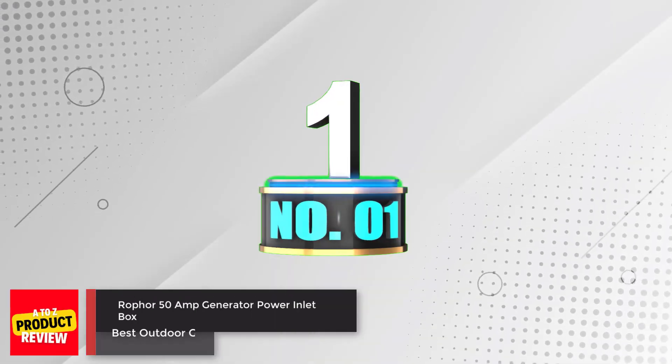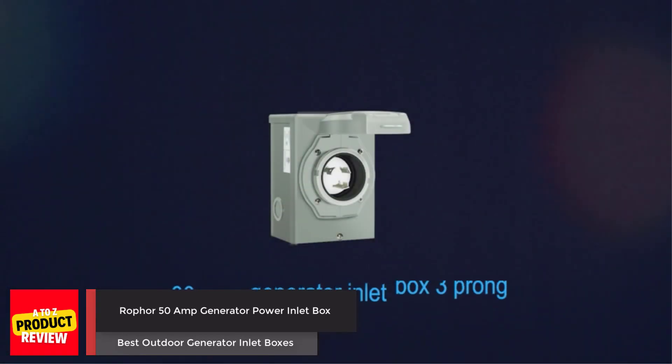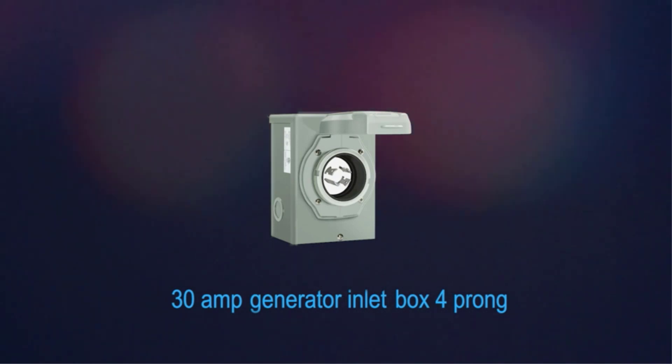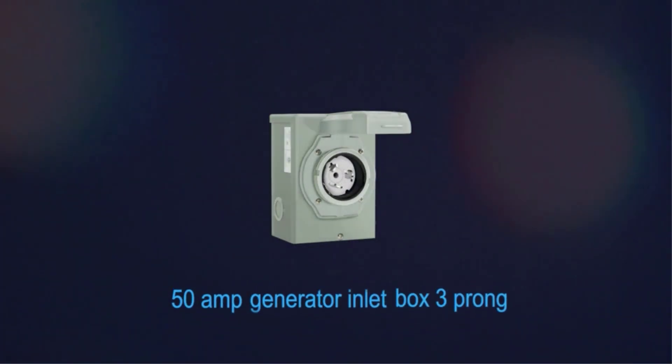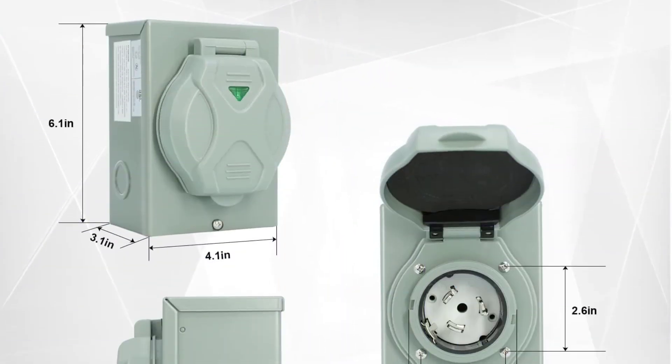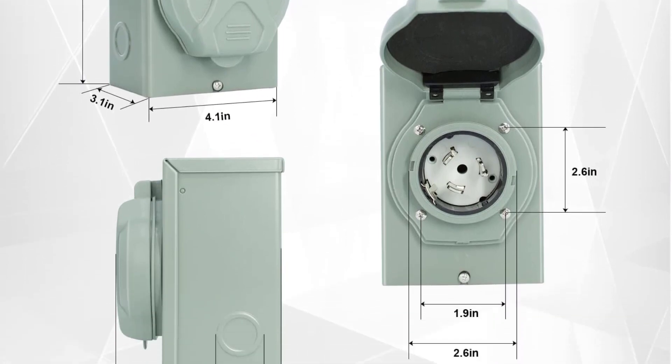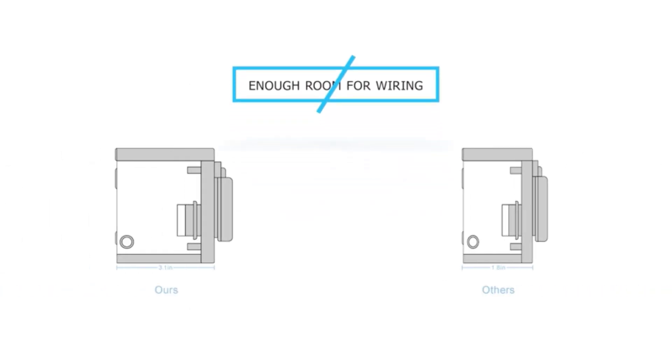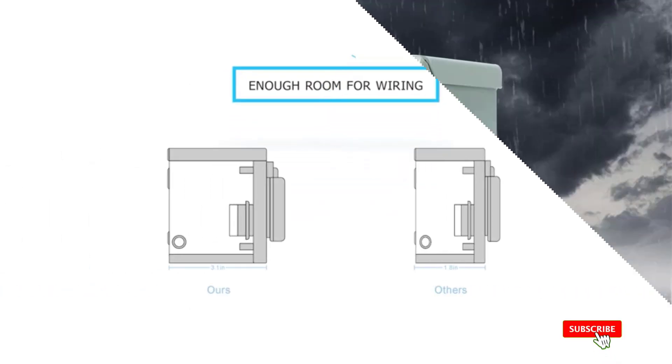Number 1. RAWfer 50 Amp Generator Power Inlet Box is an Outdoor Watertight electrical inlet for a 50 Amp SS250 generator cord. Designed for backup power during a power outage, it is safely hardwired through an outside wall directly to the transfer switch or panel, eliminating the need for cords running through windows or doors.